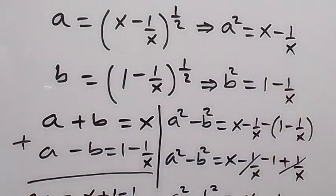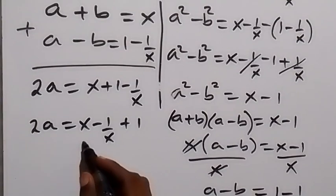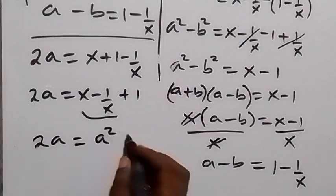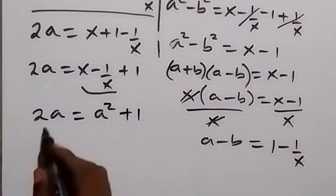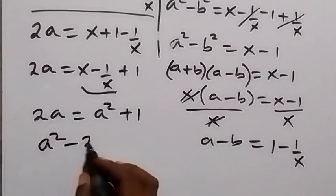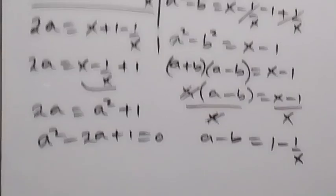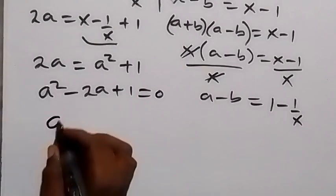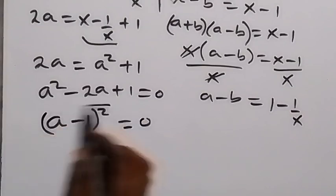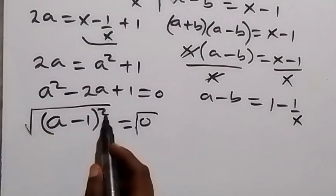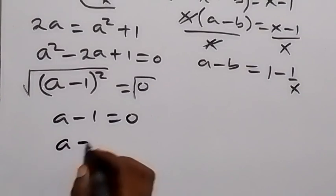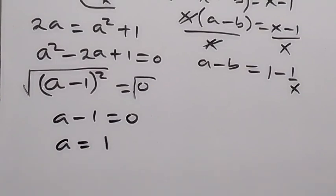So we have 2a equals a squared plus 1. Rearranging to form a quadratic equation: a squared minus 2a plus 1 equals 0. The left-hand side factors as (a minus 1) squared equals 0. Taking the square root of both sides gives a minus 1 equals 0, so a equals 1.